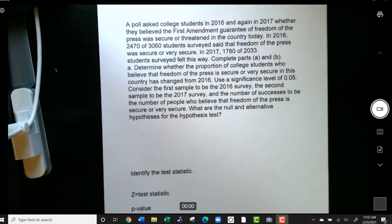A poll asked college students in 2016 and again in 2017 whether they believed the First Amendment guarantee of freedom of the press was secure or threatened in the country today. In 2016, 2,470 of 3,060 students surveyed said that freedom of the press was secure or very secure. In 2017, 1,780 of 2,033 students surveyed felt this way.